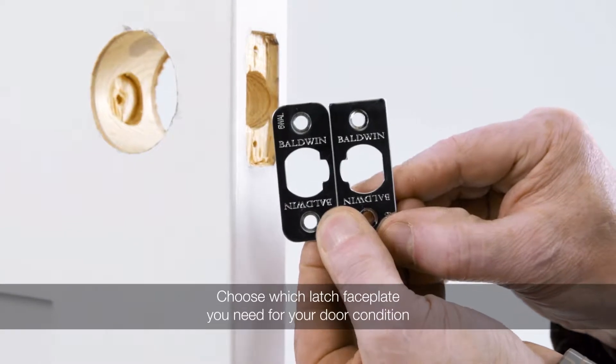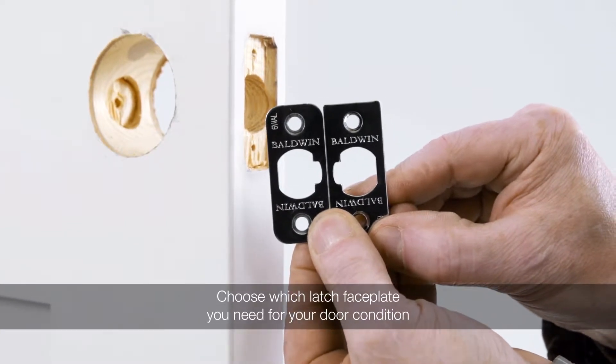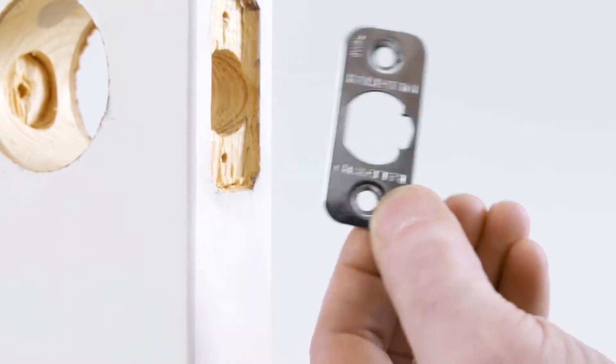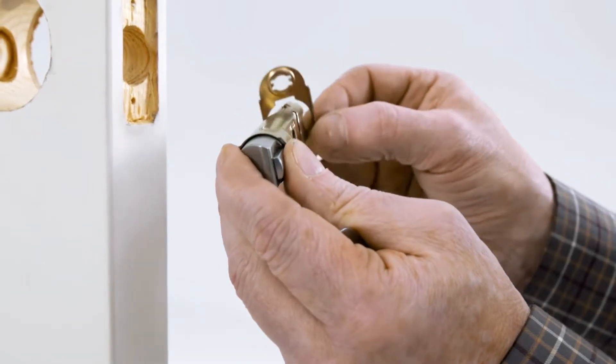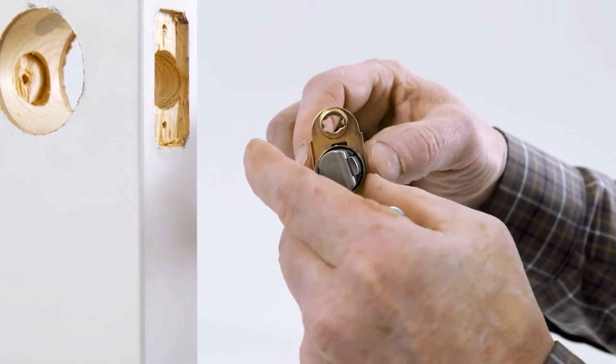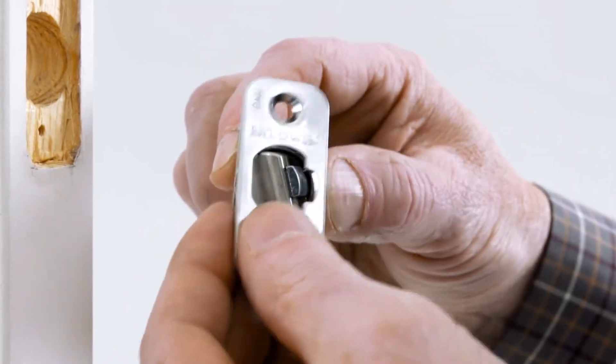Determine which latch faceplate you need to use based on your door prep. We will be using a radius faceplate in this installation. Slide the backplate onto the latch and snap together the front and backplate.